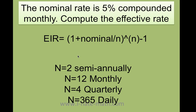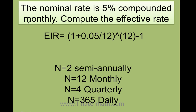Let's do an example. Let's say they tell you the nominal rate is 5% compounded monthly. Compute the effective rate. So I have 1 plus the nominal divided by n, all that elevated to n minus 1. It's compounded monthly, so I follow the formula and do 1 plus 0.05 over 12. In your calculator, always do this part first, then do plus 1, then elevate that to 12, and finally subtract your answer minus 1.